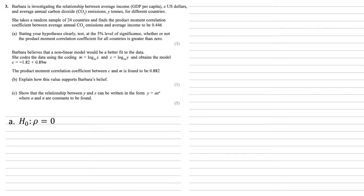So our null hypothesis is that rho, the product moment correlation coefficient, is equal to zero. The question is talking about whether or not it's greater than zero, so our alternate hypothesis is rho larger than zero.